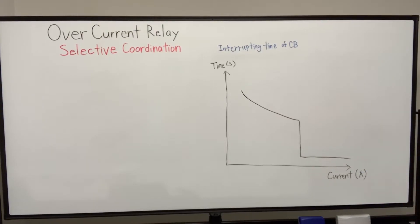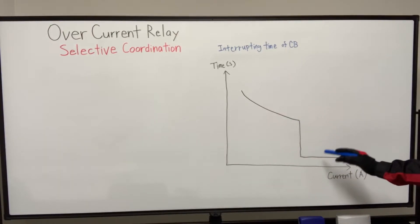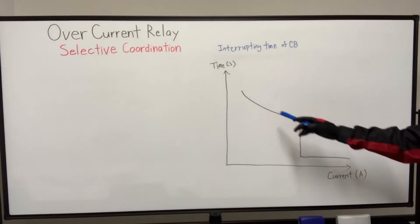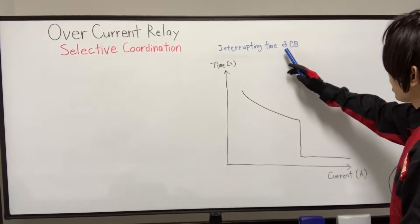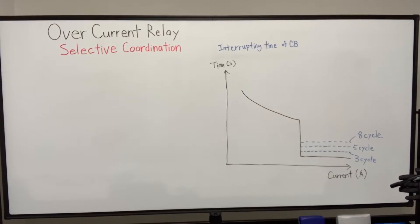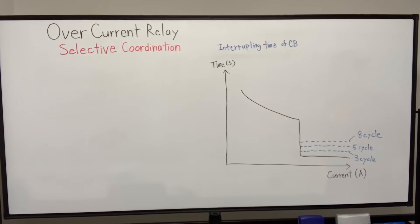This diagram shows time-current characteristics of mixed type overcurrent relay, which has inverse time and instantaneous element. And as I mentioned, we need to consider the interrupting time of circuit breaker. So there are some examples of 3-cycle, 5-cycle, and 8-cycle interrupting time of circuit breaker respectively.